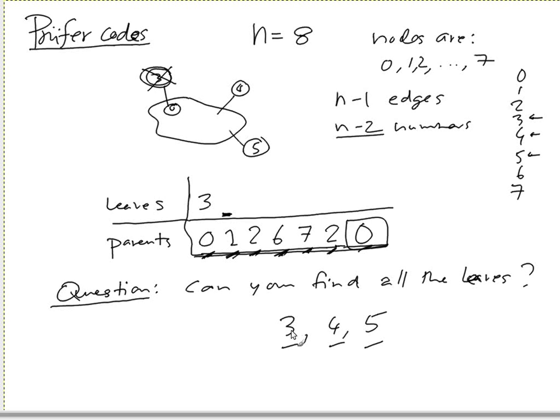So we no longer have three here. So we know that the set of leaves would be four and five. And then we pick the minimum one, so we pick four. Okay, so we put four in here.